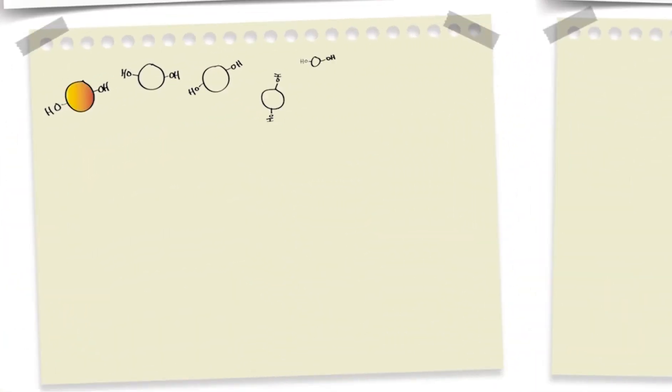So here are my diagrams of some generalized monomers, each with a free hydroxyl OH group at each end.